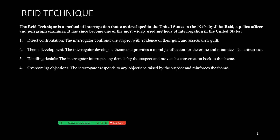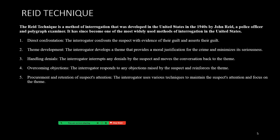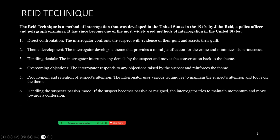Continuing, there are several steps to this process of wearing someone down. The procurement and retention of the suspect's attention: the interrogator uses various techniques to maintain the subject's attention and focus on the theme, because after a lengthy period of being badgered about their guilt — whether they are guilty or not — a suspect is bound to become desensitized to the process. Handling the suspect's passive mood: if the suspect becomes passive or resigned, the interrogator tries to maintain momentum and move towards a confession.